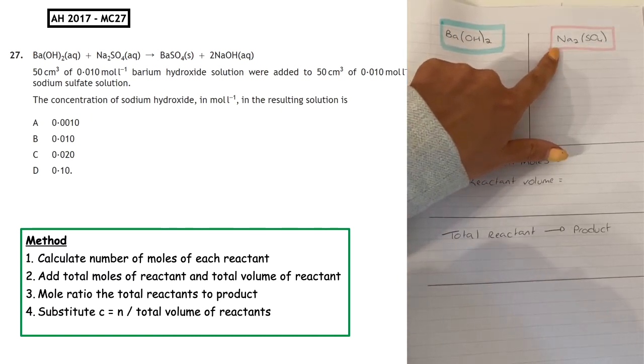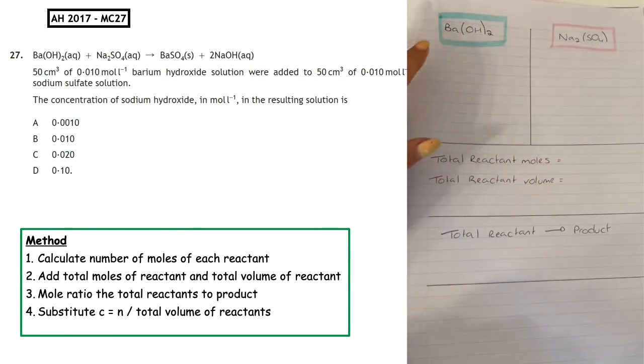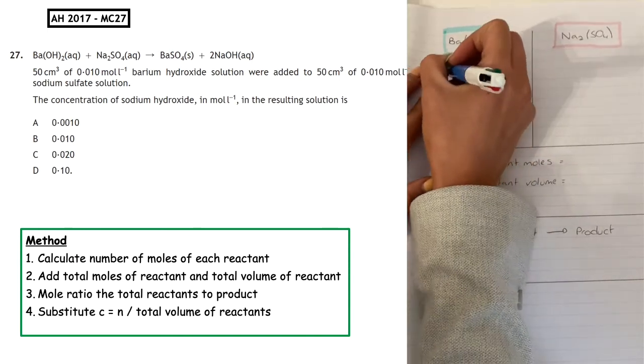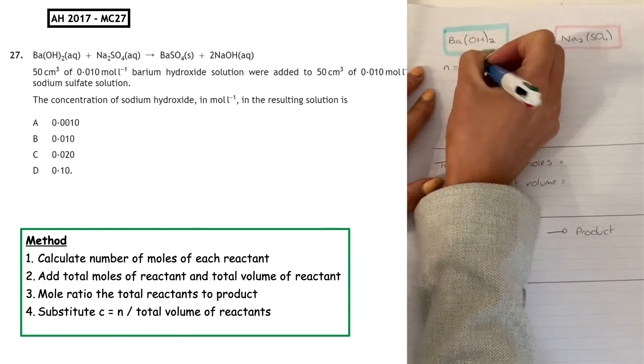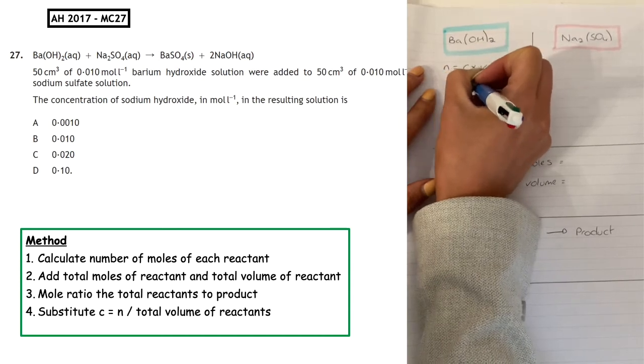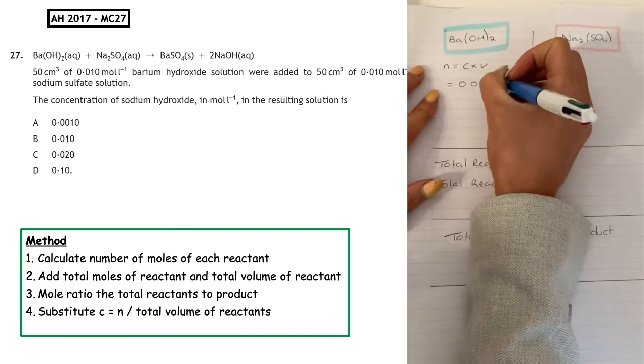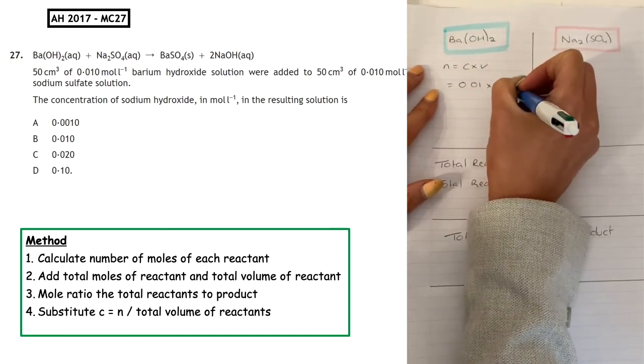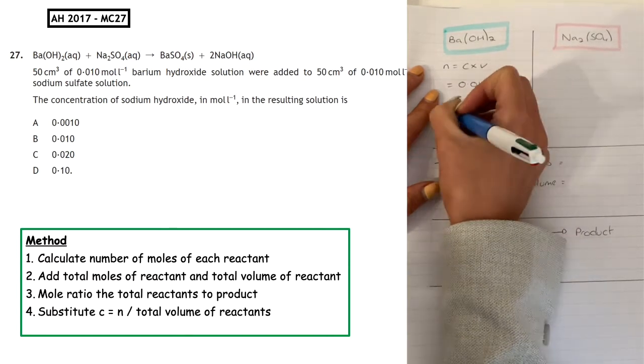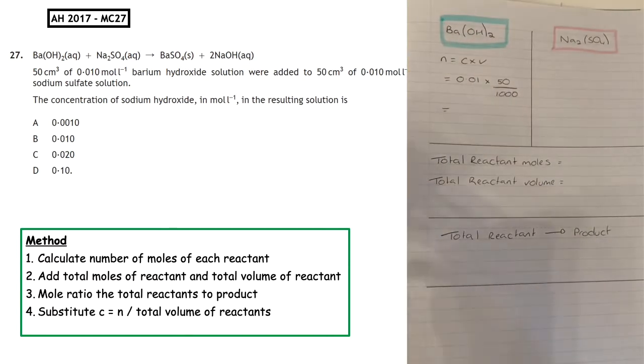As a result, because we're working with two reactants, we have to calculate the number of moles to identify which substance could be in excess. So n equals c times v. The concentration we're given is 0.01 times 50 centimeters cubed divided by 1000 to put it into liters.